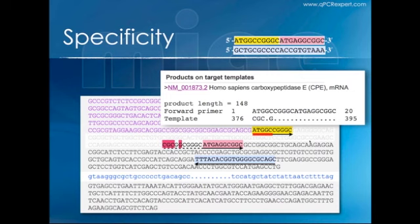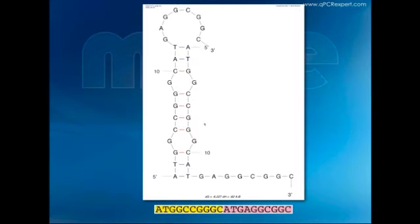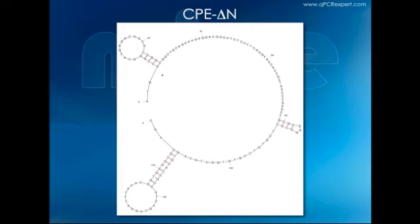The second problem with this assay is that the forward primer is highly structured—it binds to itself and forms a stem structure. At the annealing temperature, this internal stem structure has to compete with the amplicon for binding, suggesting this primer will generate quite an inefficient assay. Furthermore, looking at the amplicon, both the forward and reverse primer binding regions have stem-loop structures, creating additional problems with hybridization and initiating a PCR reaction, especially since the forward primer is already binding to itself.